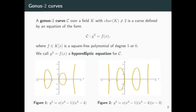A genus 2 curve, similar to an elliptic curve, can be affinely defined by an equation of the form y² = f(x). Here the polynomial f has degree 5 or 6. We call this equation a hyperelliptic equation. Below you can see two sketches of hyperelliptic curves — one with a degree 5 polynomial and on the right side one with a degree 6 polynomial.